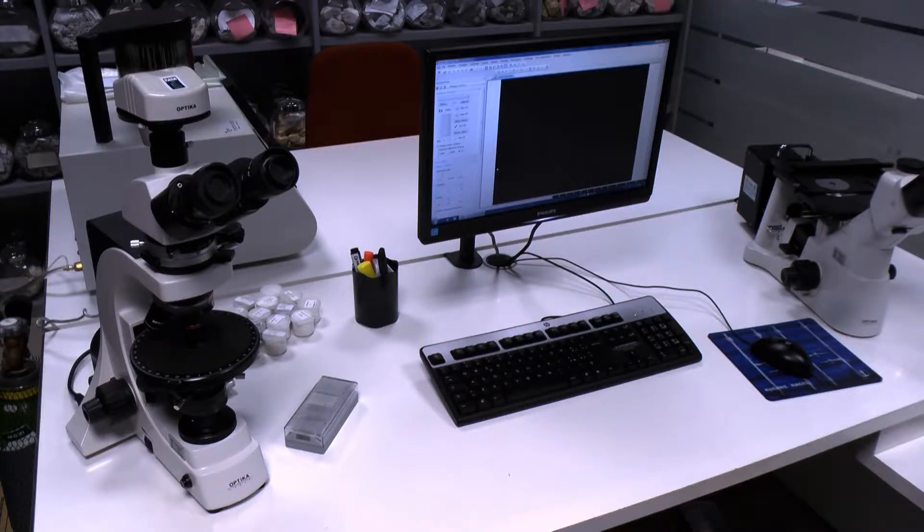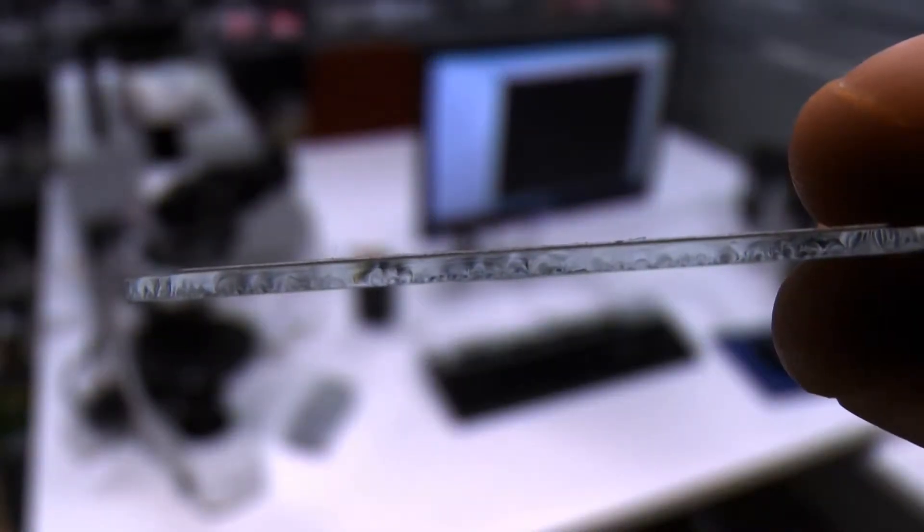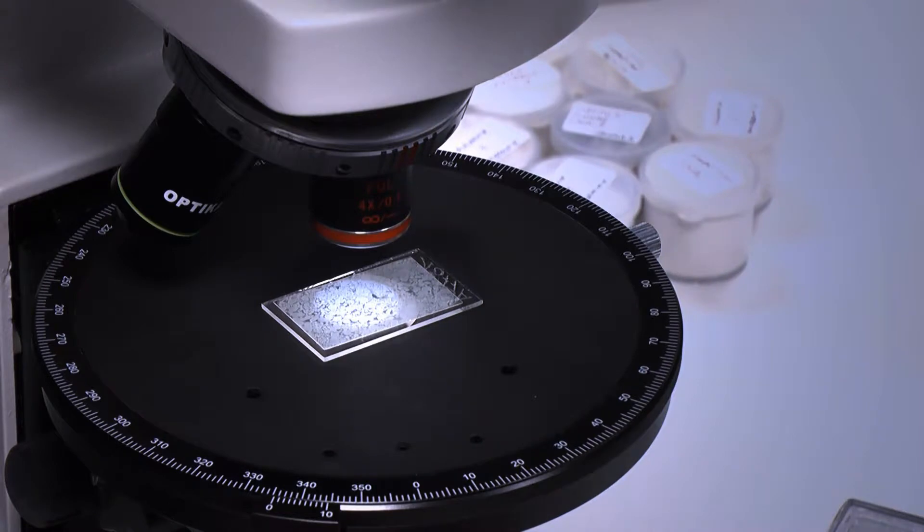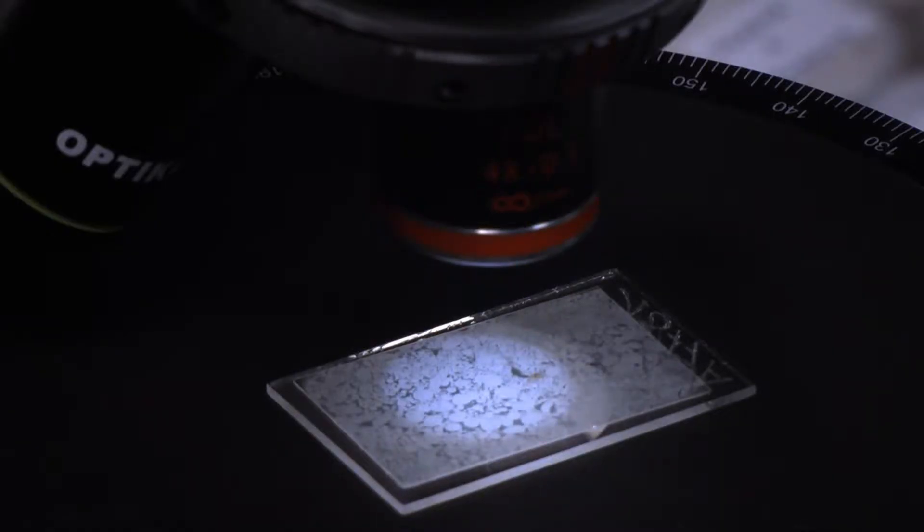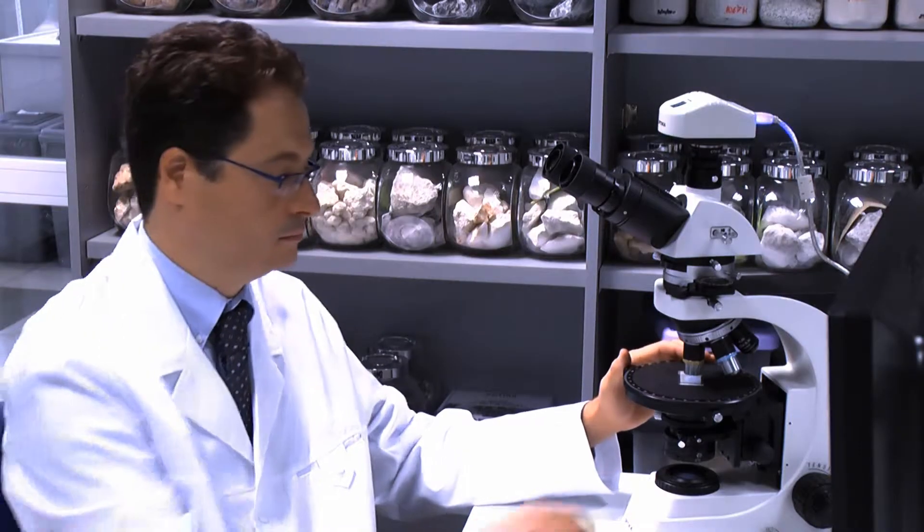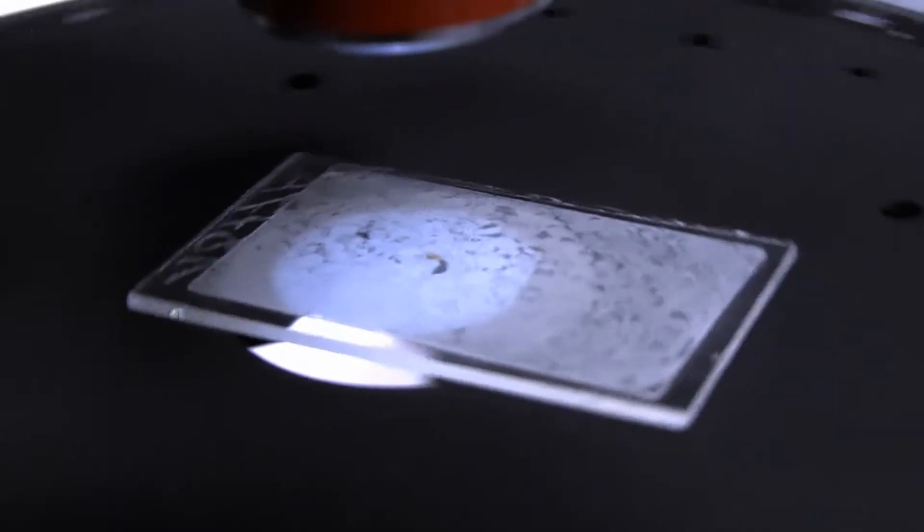The same sample is finally used to create a thin section of 30 microns thickness which is analyzed using a polarizing microscope. This is the so-called petrographic analysis, which is generally used for the mineralogical and microstructural analysis of the stone.